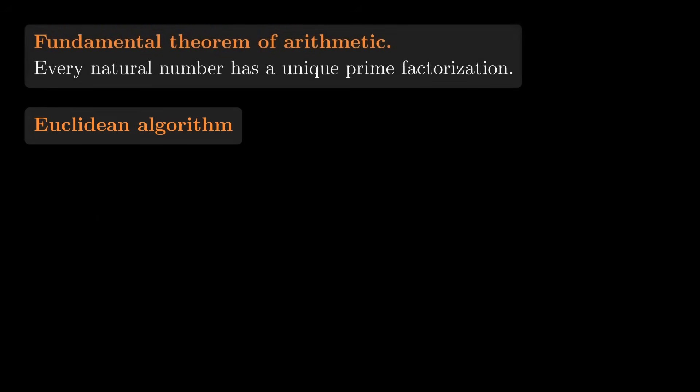Okay, let's get back to the fundamental theorem of arithmetic. How can we use the Euclidean algorithm to understand why every natural number has a unique prime factorization?